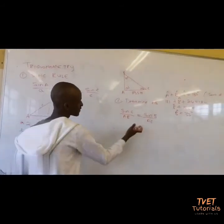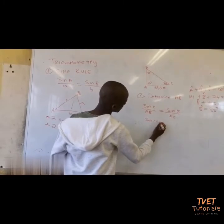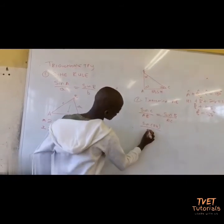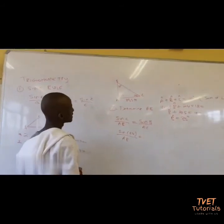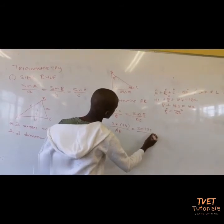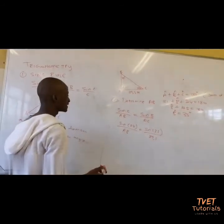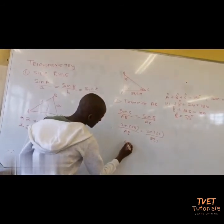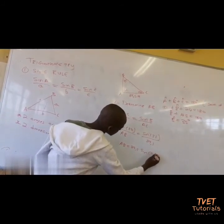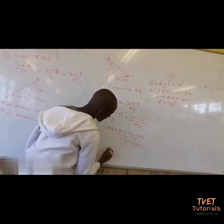Therefore, you go to the formula and substitute. Your sine C is 24 degrees. So AP over sine B equals sine C over AC. You say: AP equals sine of 35 all over AC, which is 89.5. You cross multiply: AP equals 89.5 times sine of 24, all over sine of 35 degrees.